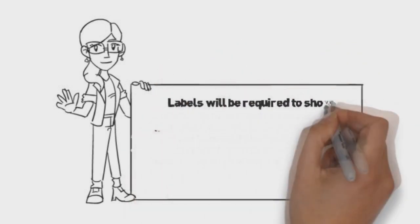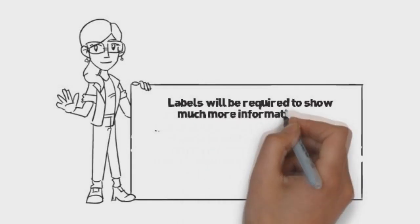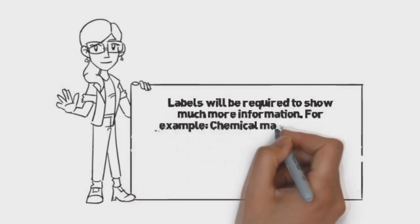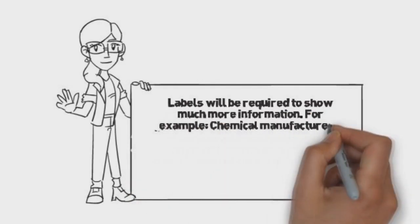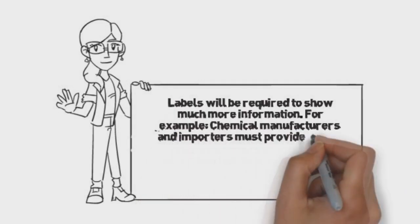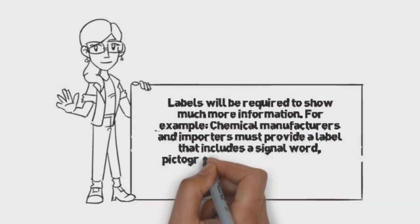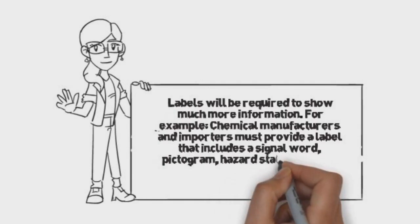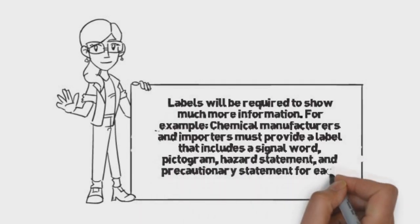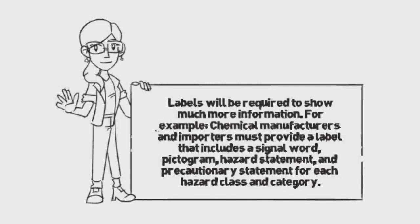Labels will be required to show much more information than before. For example, chemical manufacturers and importers must provide a label that includes a signal word, a pictogram, a hazard statement, and precautionary statement for each hazard class and category.